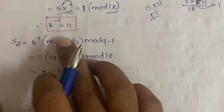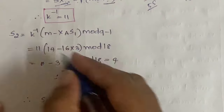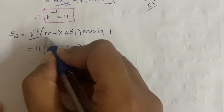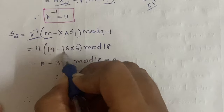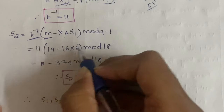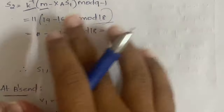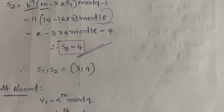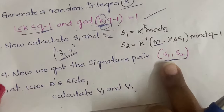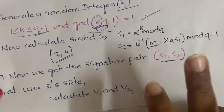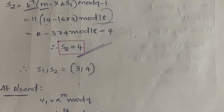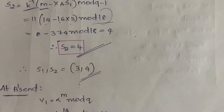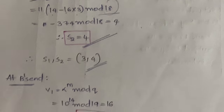Now compute s2: s2 = k_inverse × (m − xa × s1) mod (q−1) = 11 × (14 − 16 × 3) mod 18. Calculating gives s2 = 4. So the signature pair is (s1, s2) = (3, 4).